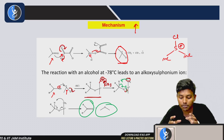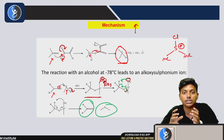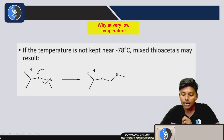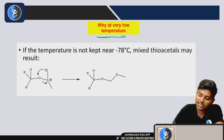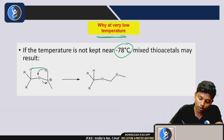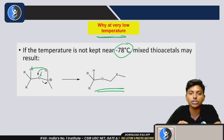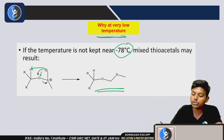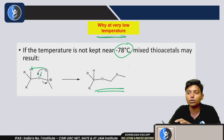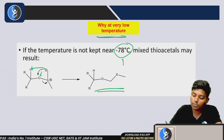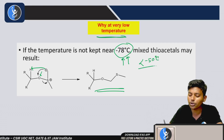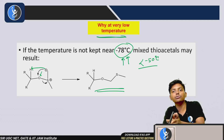Why is the temperature kept very low? If the temperature is not very low, the negative charge cannot abstract the proton from the correct position; instead it attacks the oxygen and forms an ether or sulfo-ether by-product. Because of this, we put the reaction at −78°C or less than −50°C. This is a drawback, but it can be achieved using liquid nitrogen or appropriate reaction conditions.